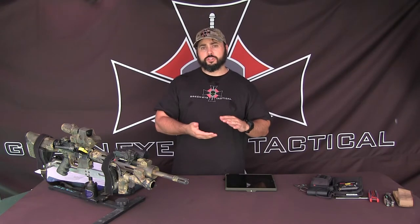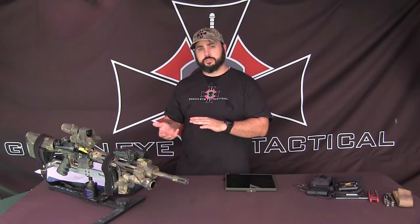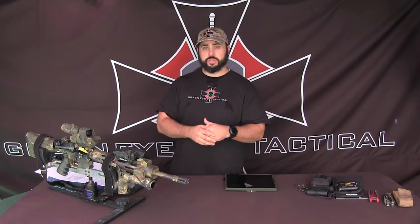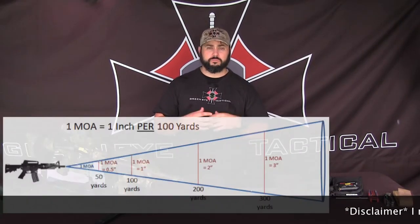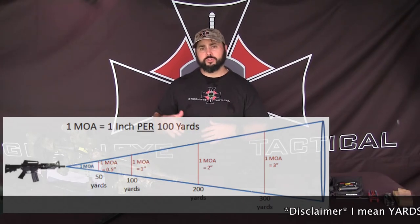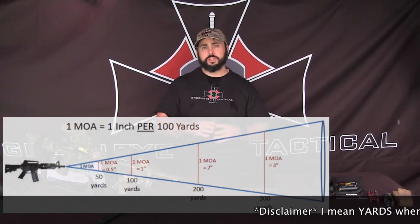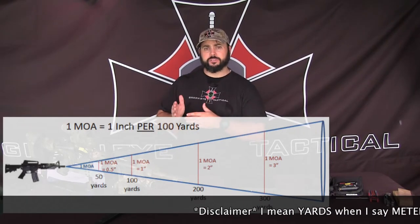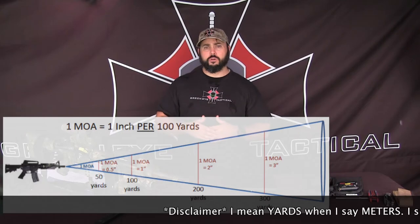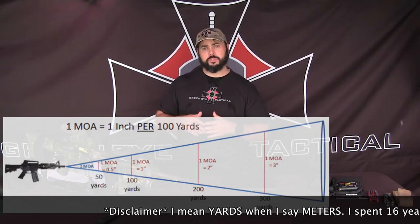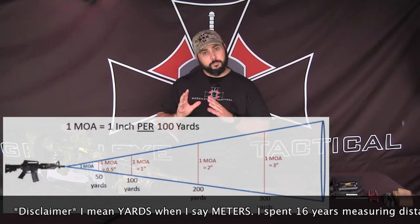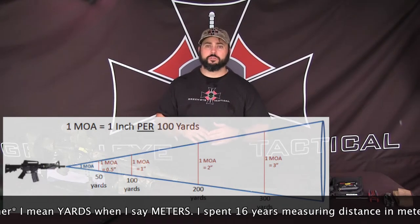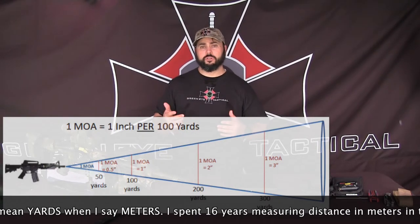Minutes of angle also adapts to the distance that we're using it at — it's kind of a constant form of measurement. We use 100 meters as the base for our minutes of angle measurement, because one MOA equals about one inch at 100 yards.